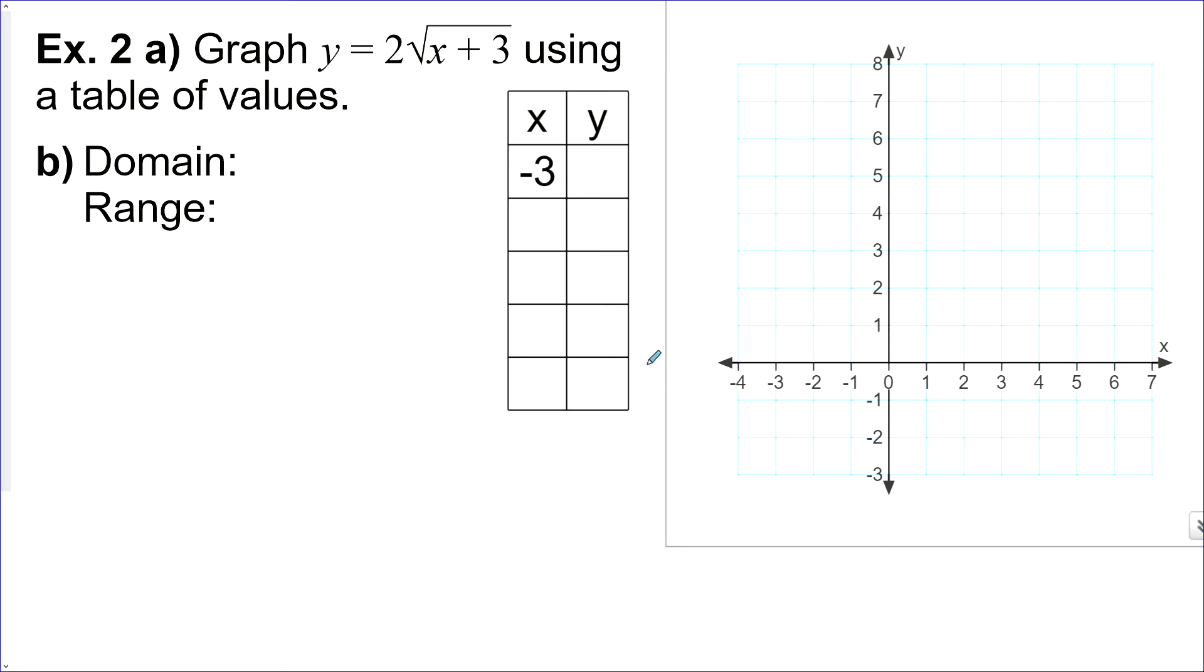Graph y equals 2 times the square root of x plus 3, using a table of values. Now, we're going to make the table of values here, but you could get the table of values from your calculator, putting this into y1, and then just looking at the table that your calculator produces for you. Now, the first one I chose was negative 3 because that's a nice number. It will make the radicand 0, and the square root of 0 is 0, and 0 times 2 is still 0. Now, the next useful number would probably be negative 2. If I went to negative 4, my radicand would be negative, and then my answers wouldn't be real. So, negative 2 plus 3 is 1, square root of 1 is 1, and 2 times 1 is 2.